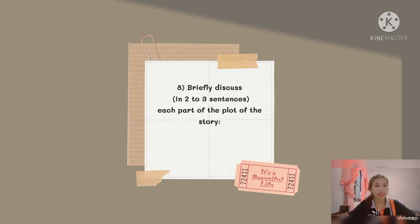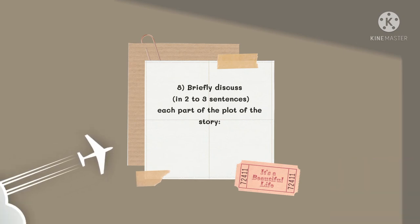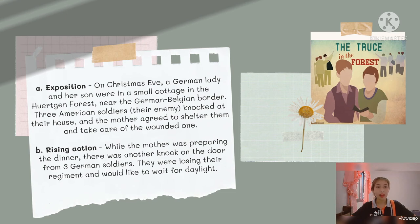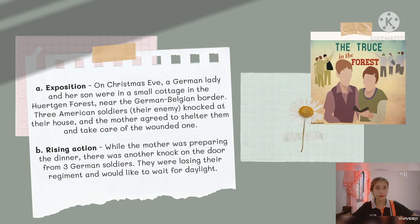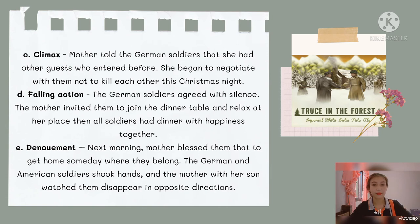Next, the 8th question: briefly discuss in 2-3 sentences each part of the plot. For exposition: on Christmas Eve, a German lady and her son were in a small cottage in the Horken Forest near the German-Belgian border. Three American soldiers — their enemy — knocked at their house, and the mother agreed to shelter them and take care of the wounded one. For rising action: while the mother was preparing dinner, there was another knock on the door — three German soldiers who had lost their regiment and would like to wait for daylight. For the climax: the mother told the German soldiers that she had other guests inside.